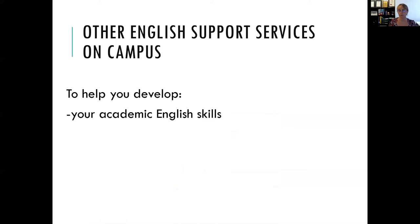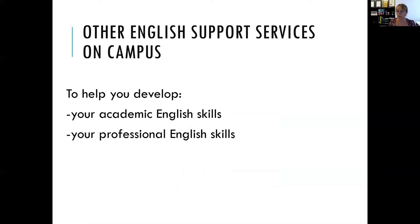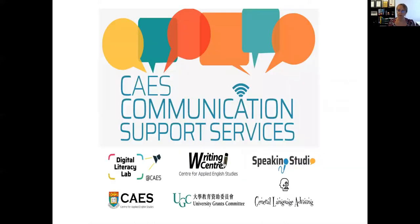Not only do we offer those courses, but at CAES we also offer support services on campus. These support services help you develop your academic English skills, your professional English skills — which includes English for the workplace and for applying for a job, such as CV writing skills — and also social English skills. For example, if you want to improve your social spoken English, we provide venues for you to get together with other students and chat in English. All of these services are called the CAES Communication Support Services, or CSS.